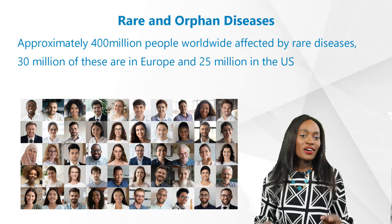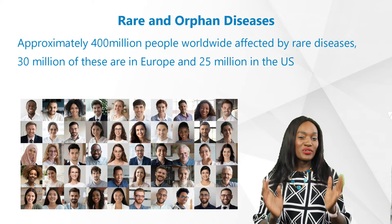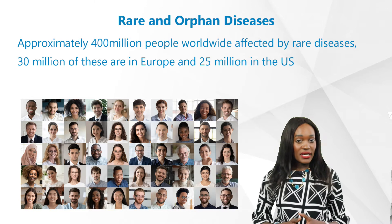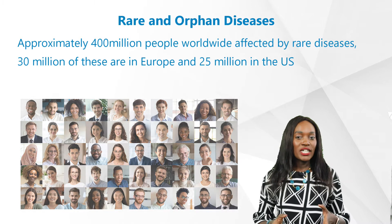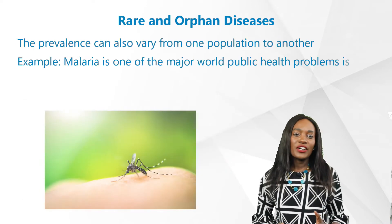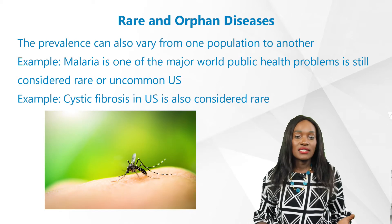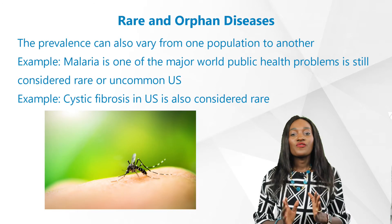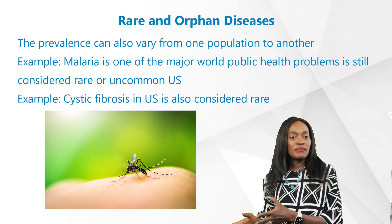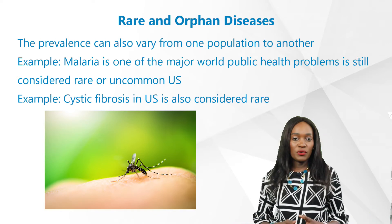There are approximately 400 million people worldwide affected by rare diseases — 30 million of these are in Europe and 25 million in the US. The prevalence can also vary from one population to another due to different reasons. What you'll find is that while individually a disease may be uncommon, it can be a major burden to a certain population.